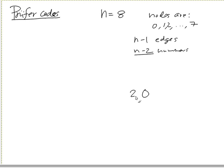So let's say 2, 7, 6, 2, 1. What else? 0, okay? So that's the Prüfer code.